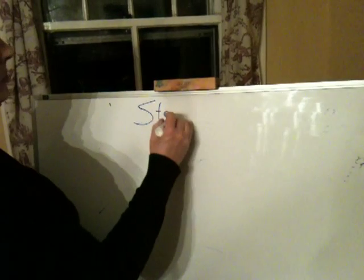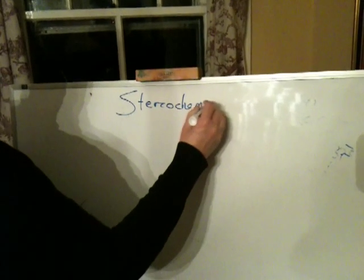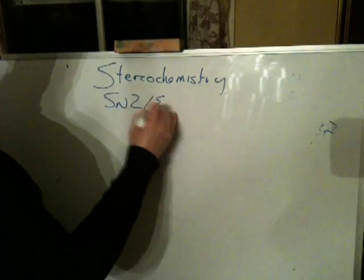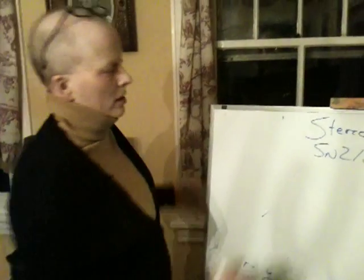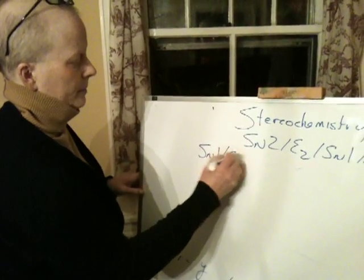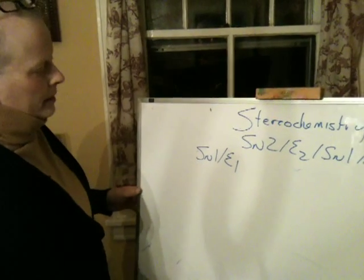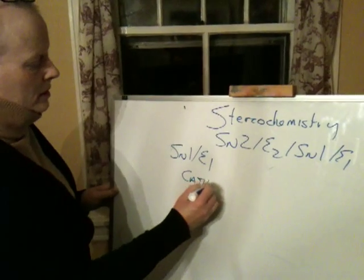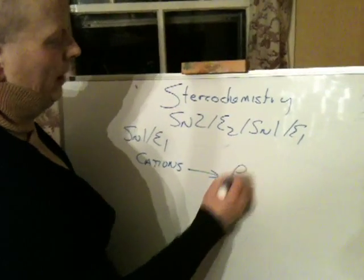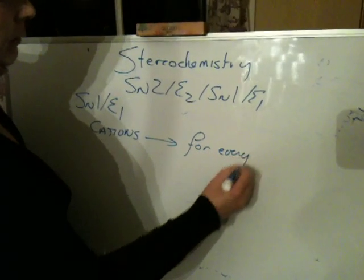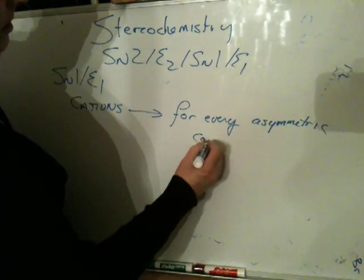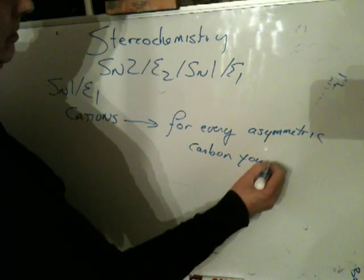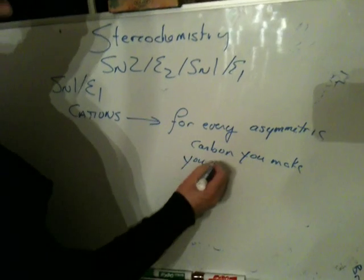The other thing I have to talk about again is stereochemistry. The stereochemistry of SN2, E2, SN1, and E1 is kind of interesting. First of all, with SN1 and E1, what I can say is that it involves cations. So what you expect with cations is what I said before: for every asymmetric carbon you make, you should write every stereoisomer.